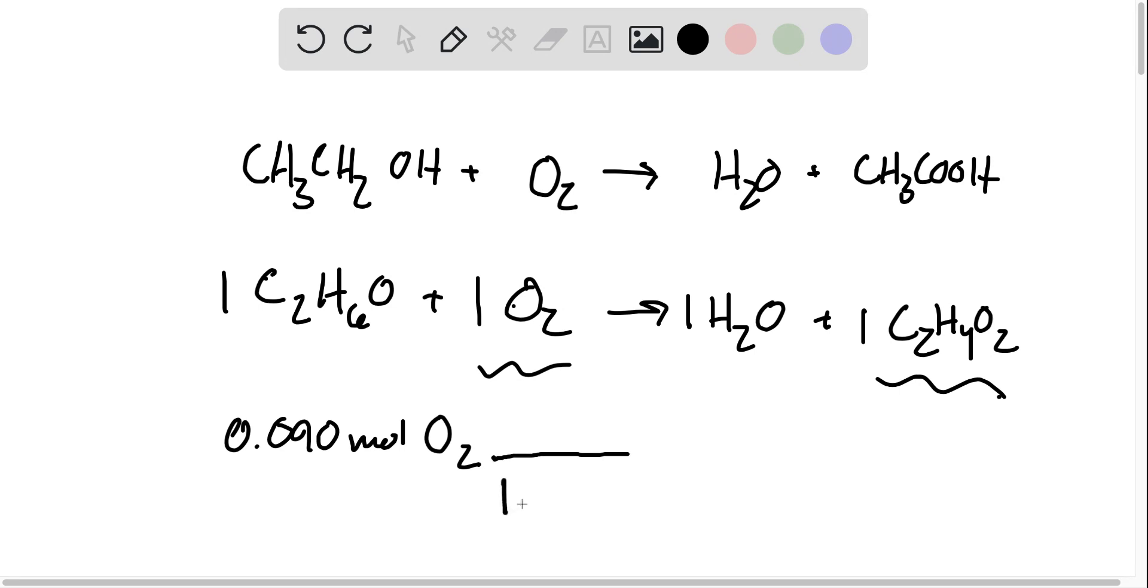Well, we know that it's one mole of O2, right from here, for every one mole of acetic acid. So our answer - moles O2 cancel - and we get 0.090 mole acetic acid.